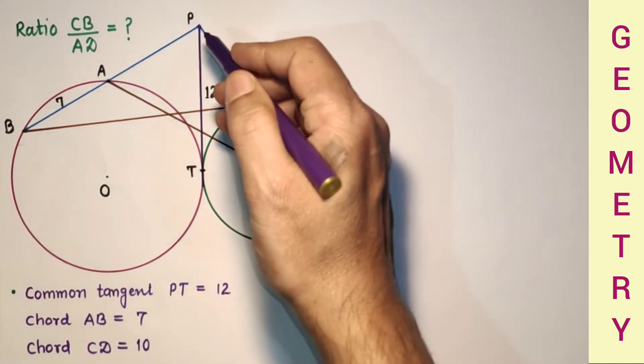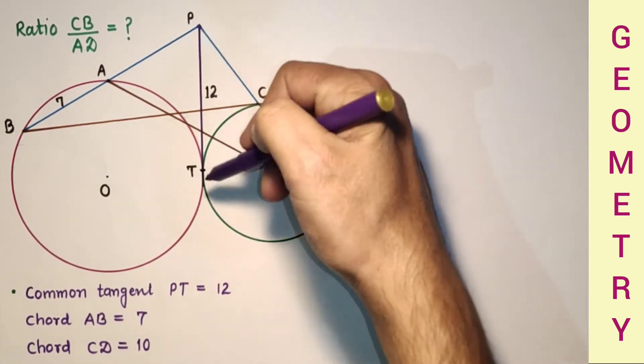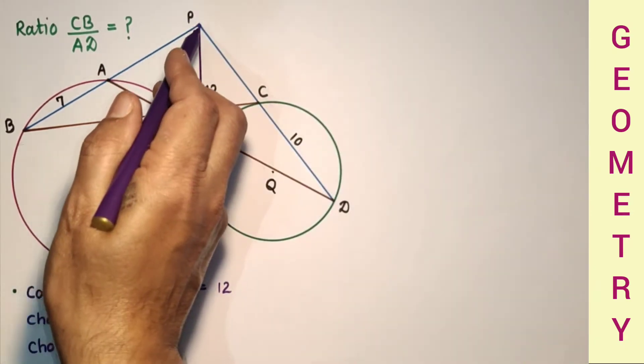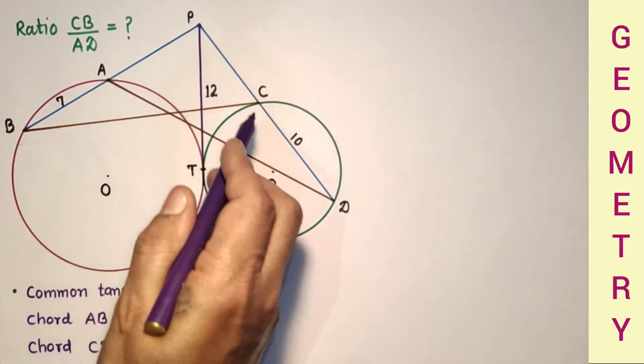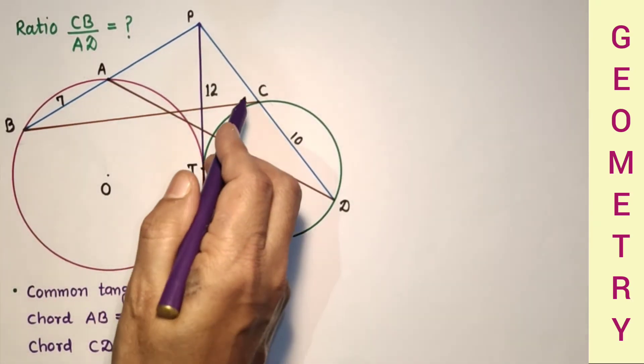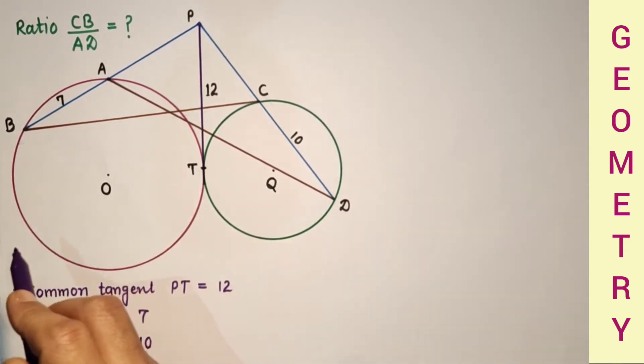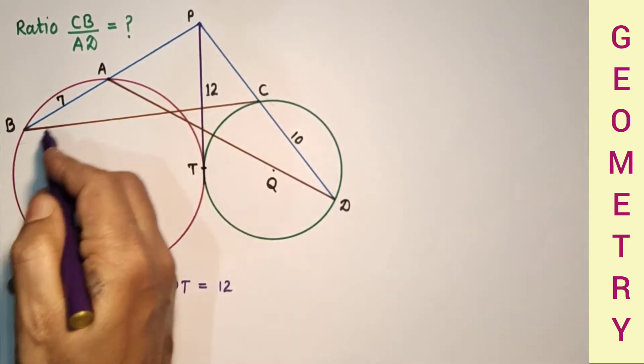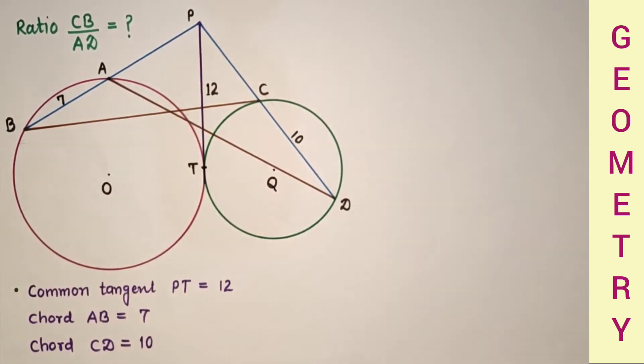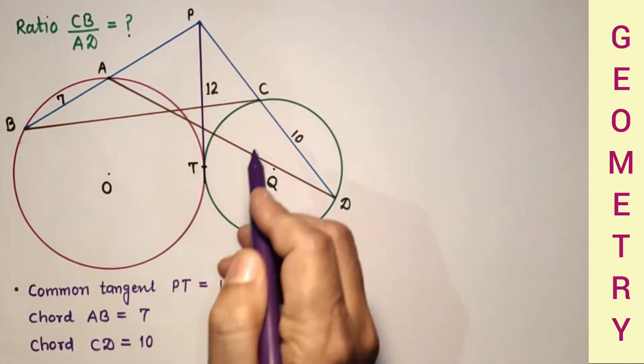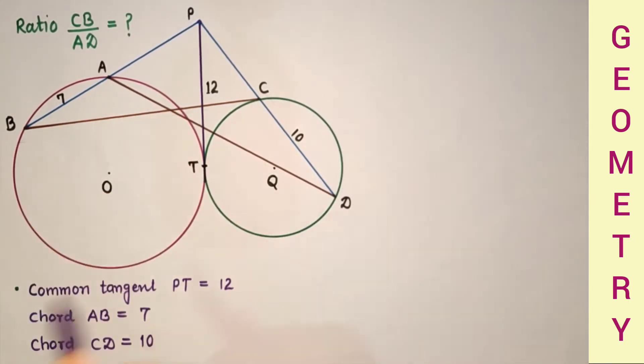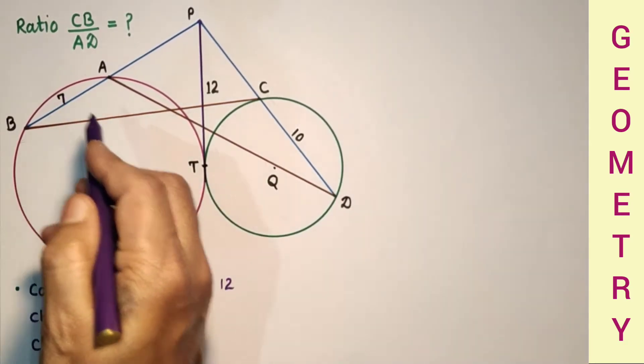From an exterior point P, this tangent which is common tangent PT is drawn, and from this point P, secant PCD is drawn and PAB is drawn. Length of chord CD is given as 10 units and length of chord AB is given as 7 units. Length of tangent PT is 12 units. We have to find the ratio of CB to AD.